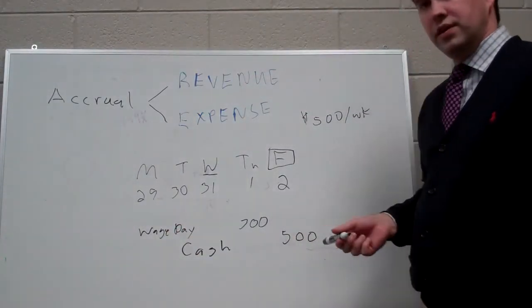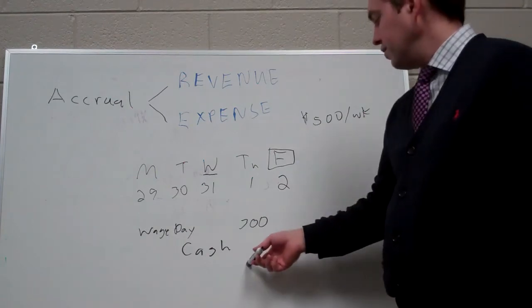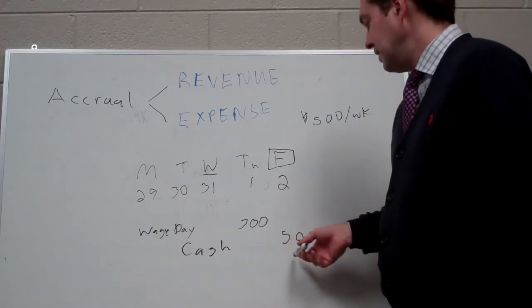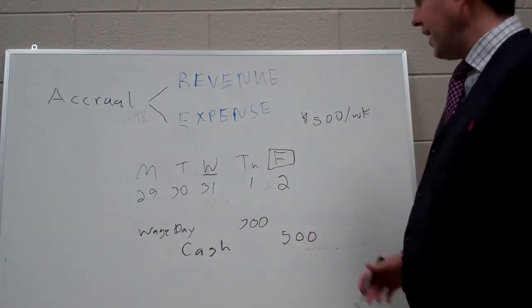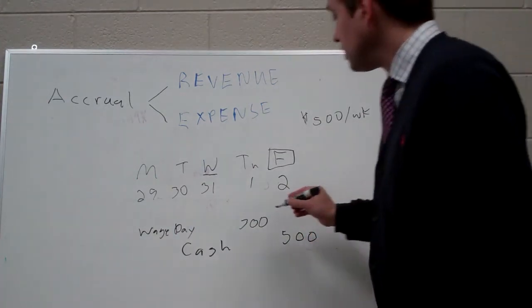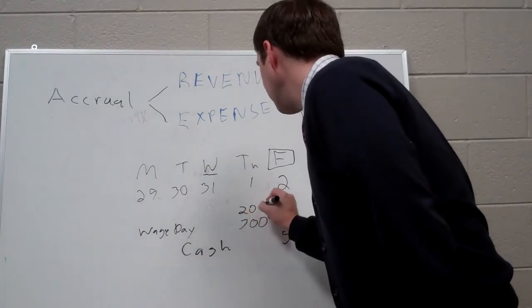Now, we said in the last video that journal entries have to balance. This is a $300 debit and a $500 credit. That can't work. We need another $200 to make this balance.